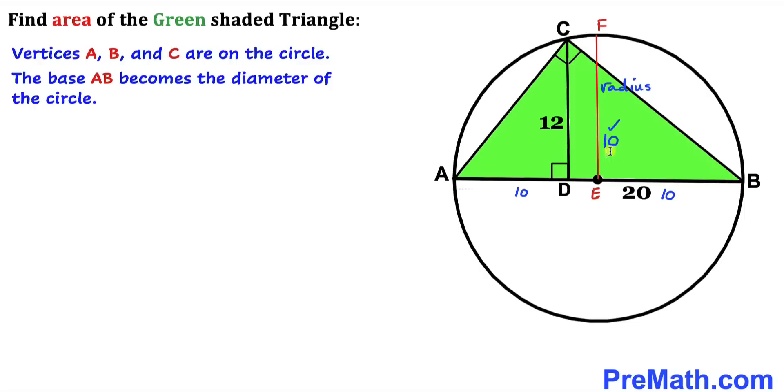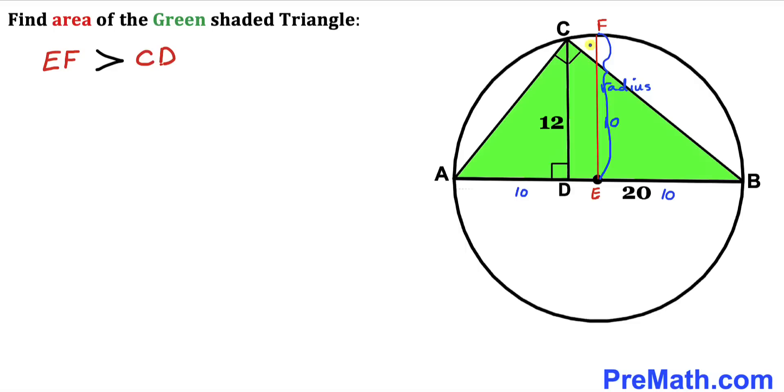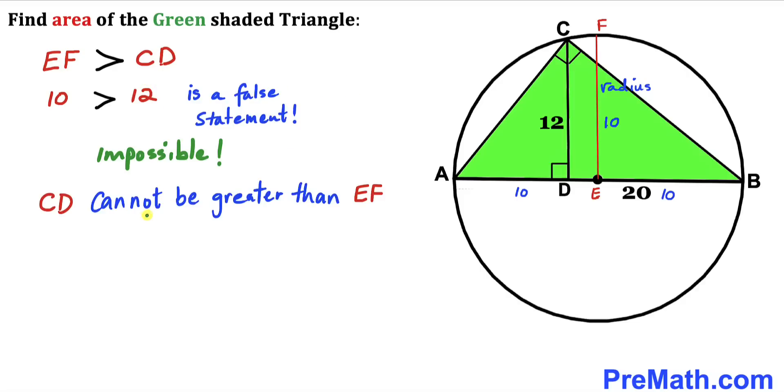Now we can see that in reality, radius EF is bigger in length than height CD. Here we can see our EF length is 10 and CD length is 12. Therefore, we can see that 10 is greater than 12 is a false statement, and that's impossible.